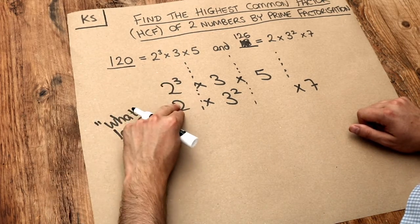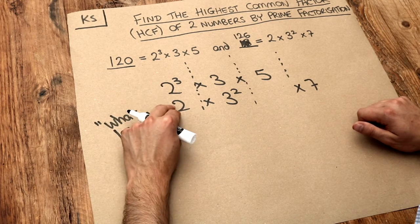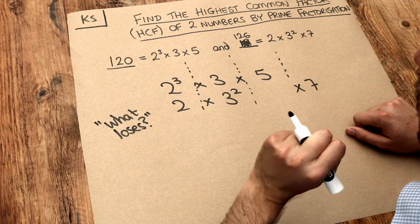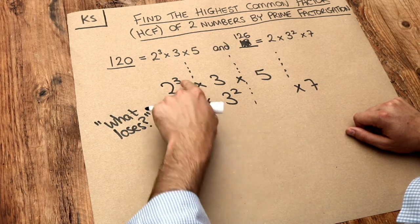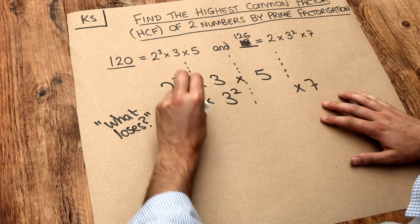This has got a two, another two, and another two in it. This one just has a single two. So they have a single two in common. You basically have to use the lower of the two indices. So if we put an index of one, one is lower than three, so what loses is 2¹.